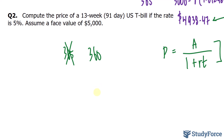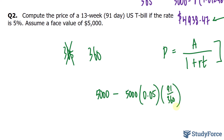Given that the face value is $5,000, we want to discount that back 91 days. So we take $5,000 and subtract from it the portion of $5,000 that is 5% multiplied by 91 over 360. We subtract from 5,000 the quantity 5,000 × 0.05 × (91/360), and what this amounts to is the price of the T-bill today, which we'll call P.